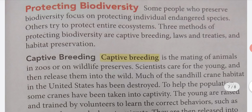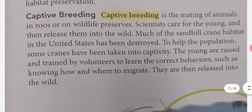Protecting Biodiversity. Some people who preserve biodiversity focus on protecting individual endangered species. Others try to protect entire ecosystems. Three methods of protecting biodiversity are captive breeding, laws and treaties, and habitat preservation. Captive breeding is the mating of animals in zoos or on wildlife preserves. Scientists care for the young and then release them into the wild. Much of the sandhill crane habitat in the United States has been destroyed. To help the population, some cranes have been taken into captivity. The young are raised and trained by volunteers to learn the correct behaviors, such as knowing how and where to migrate. They are then released into the wild.